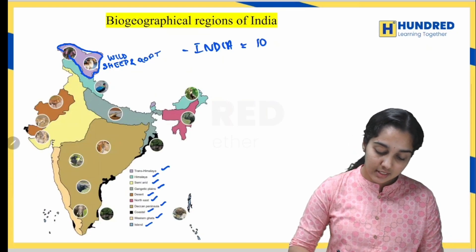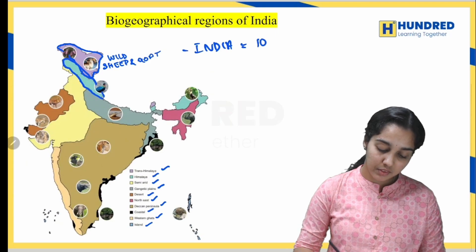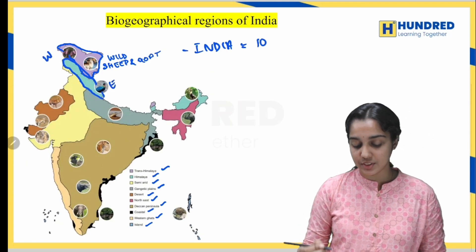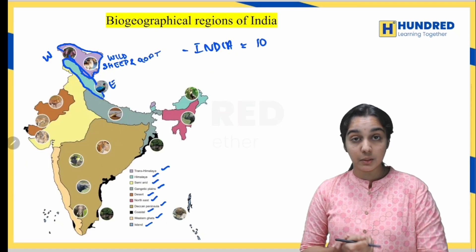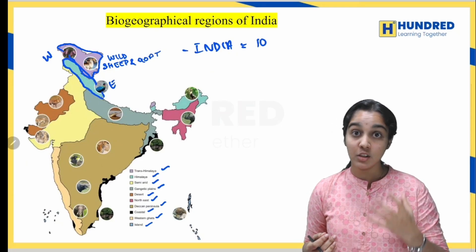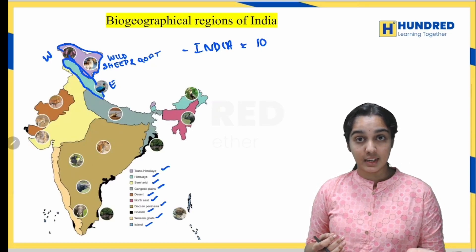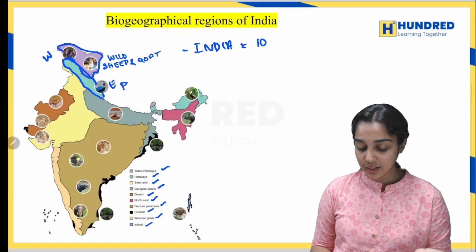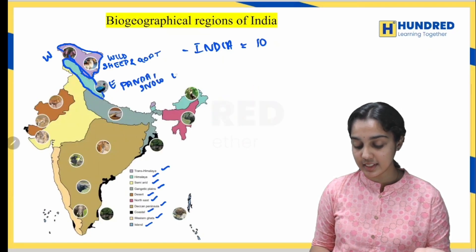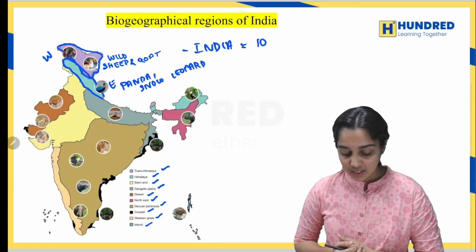Next is the Himalayas zone. This region runs from the western part of India to the eastern part of India. Various animals are present in the Himalayan region.